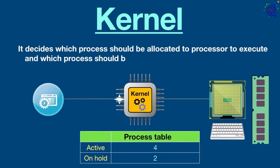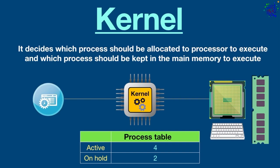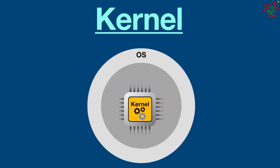The kernel also maintains a process table that keeps track of all active processes. It decides which process should be allocated to processors to execute, and which process should be kept in the main memory to execute.